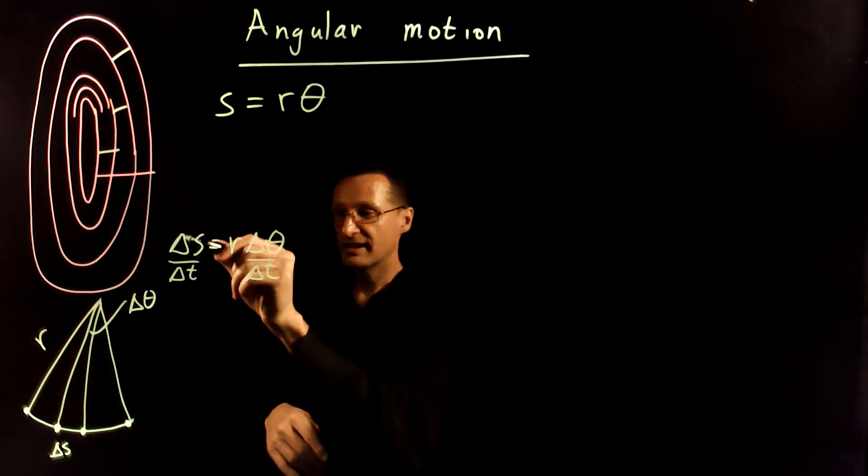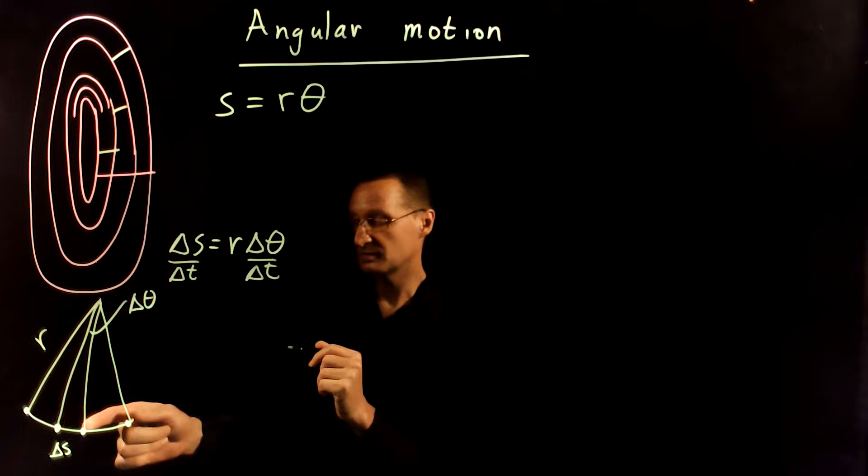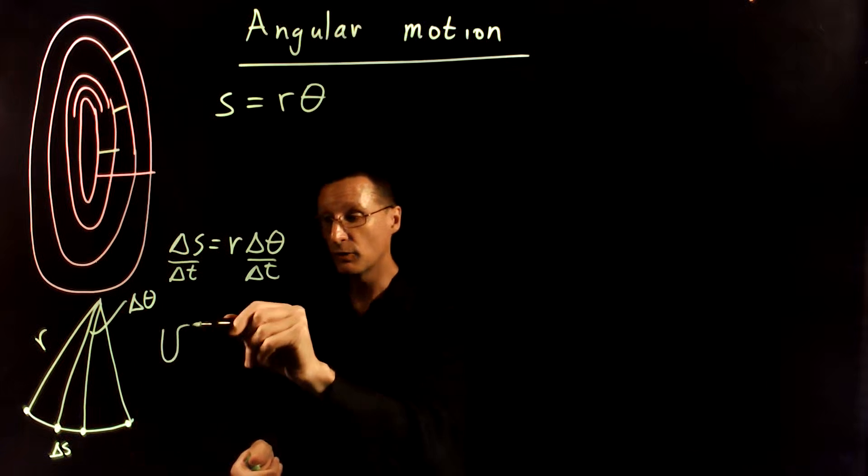Now, this quantity here, delta S over delta T, that's just the displacement over the time. That's regular old-fashioned velocity.